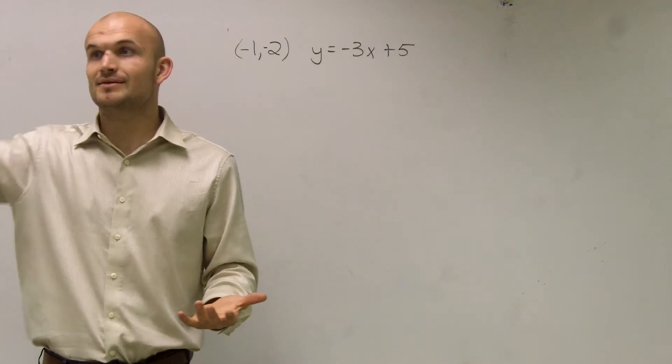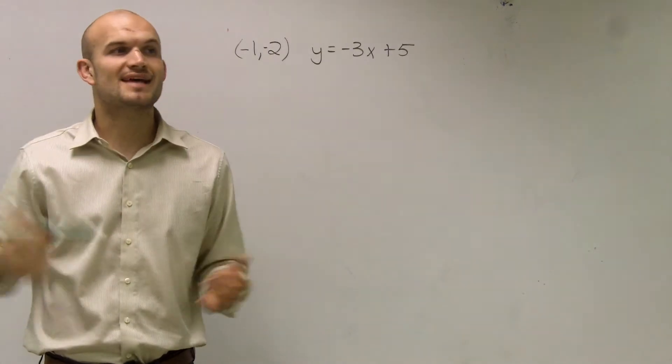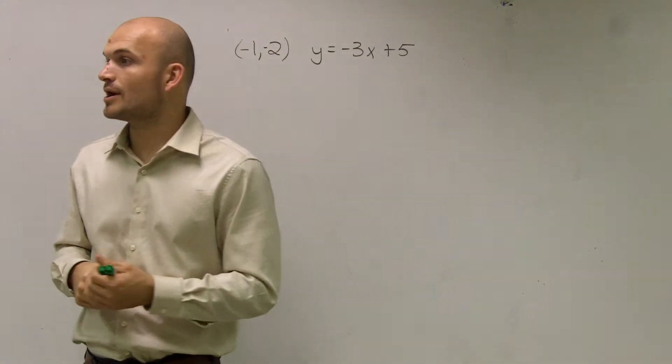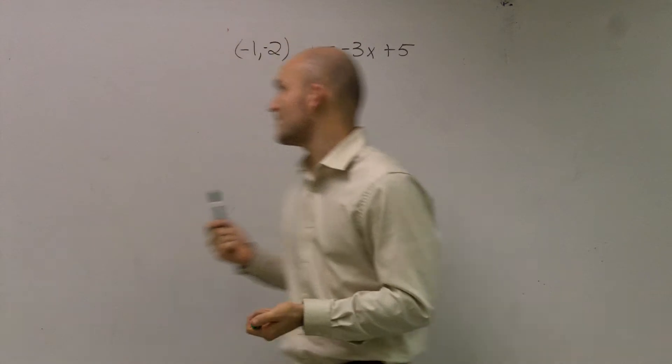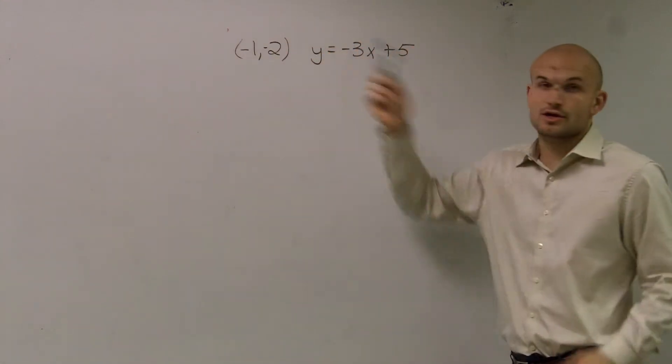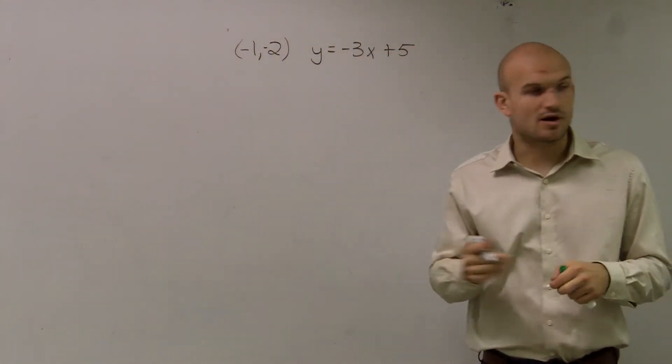Parallel lines have the same slope. They have the exact same slope, right? So now, what our problem is asking us is find a new equation that is parallel to a given line that goes through a point. So first of all,